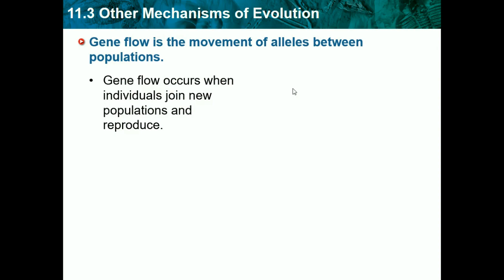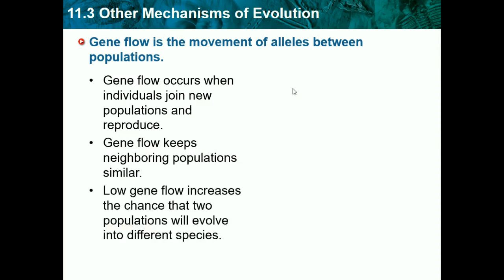Animals usually live in groups, and sometimes one group will die off with only one or two survivors who find a new population to live with — increasing that population's gene pool. Gene flow keeps neighboring populations similar because they exchange genes back and forth, keeping everybody at around the same level. Low gene flow increases the chance that two populations will evolve into different species.